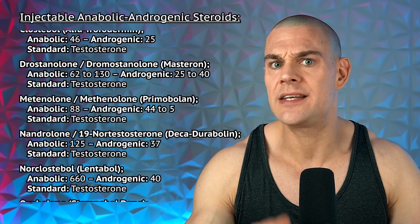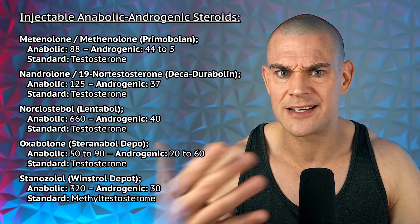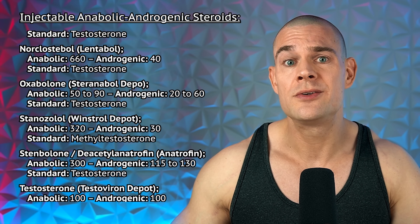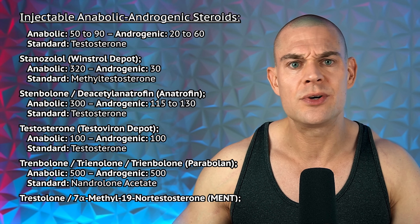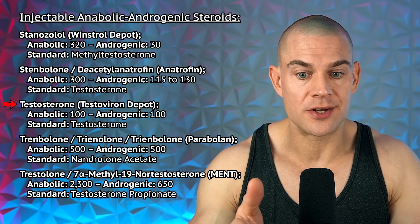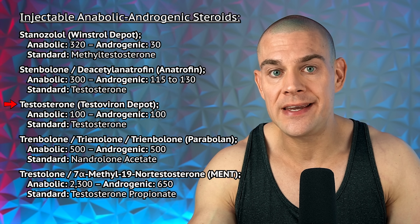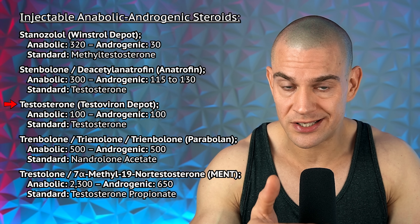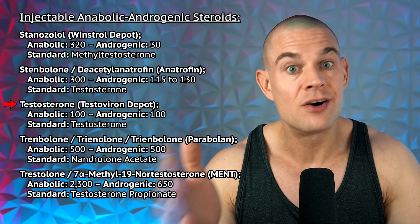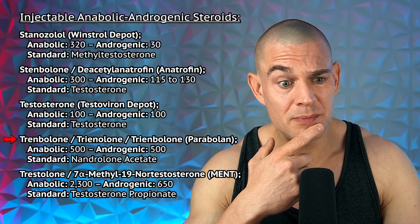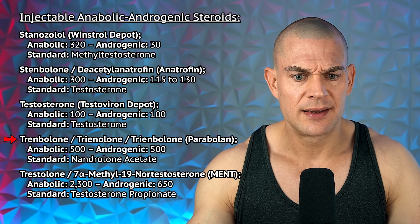As all of these ratings scroll on screen, you'll notice a common occurrence: the standard in many cases isn't just testosterone — it's also testosterone propionate, which has an ester, or it's methyl testosterone, which isn't bioidentical to the testosterone you produce endogenously, nor to what rats produce. Testosterone itself has an anabolic to androgenic rating of 100 each — that's its own standard. Then we have an outlier: trenbolone, whose reference standard is nandrolone acetate, giving it an anabolic and androgenic rating of 500 each.